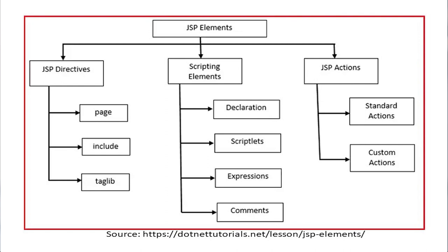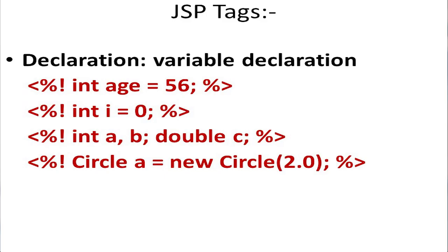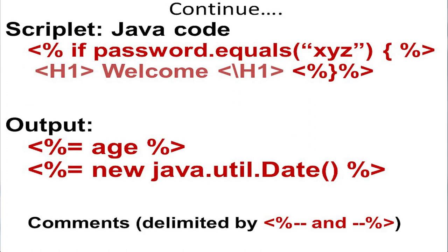The second JSP element category is scripting elements. Under scripting elements, we have declaration, scriptlet, expression, and comments. Declaration is used to declare variables in JSP using the <%! ... %> tag. For example: <%! int a = 56; %>, <%! int i = 0; %>, or <%! int a, b; double c; %>. You can also declare objects — for example, <%! Circle a = new Circle(); %> where Circle is a class.